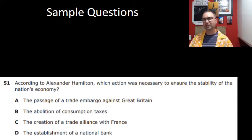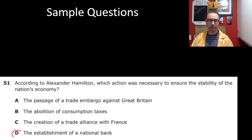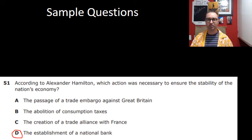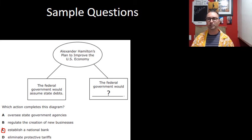We've talked about Federalists and Anti-Federalists, but there are also questions here about Hamilton. According to Alexander Hamilton, what action was necessary to ensure the stability of the nation's economy? Think of the old $10 bill — everything to do with banking and money. The big thing to know about Hamilton is establishing a national bank. His plan: the federal government assumes state debts and would establish a national bank. Remember that Hamilton became Secretary of the Treasury under President George Washington.